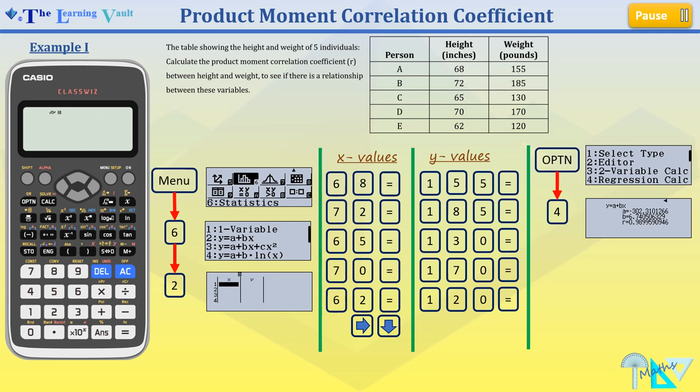And it gives us the answer of our PMCC, which is denoted with R. So our product moment correlation coefficient R equals 0.9899590946.